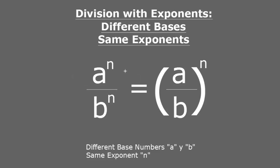Here we see a raised to the power of n divided by b raised to the power of n. The base numbers are different. One is a, the other is b, but they both share the same exponent n.